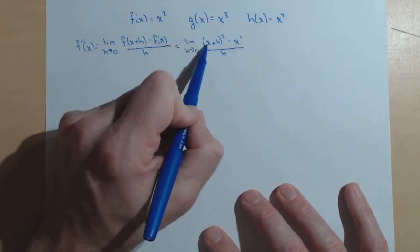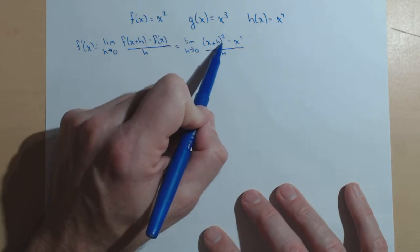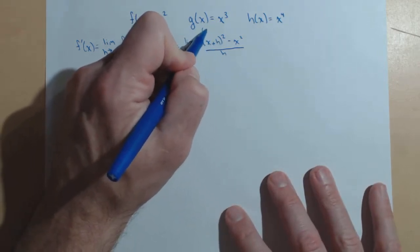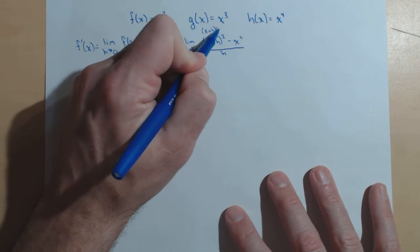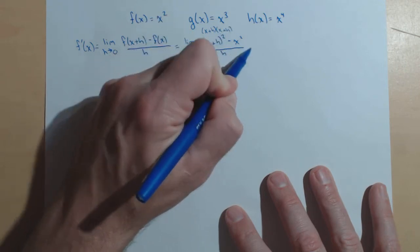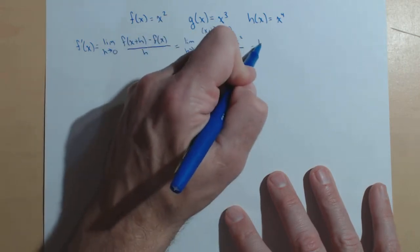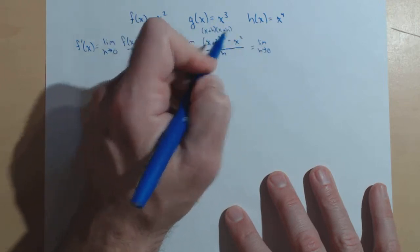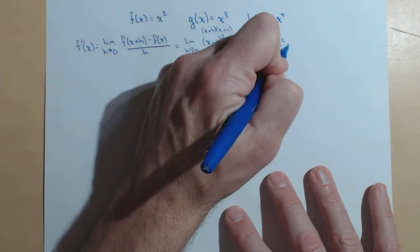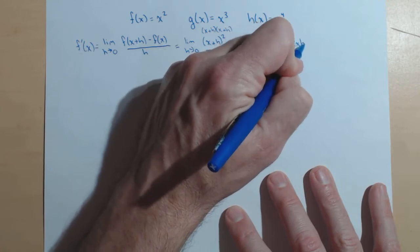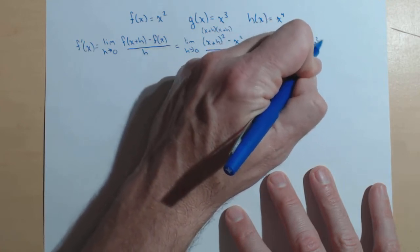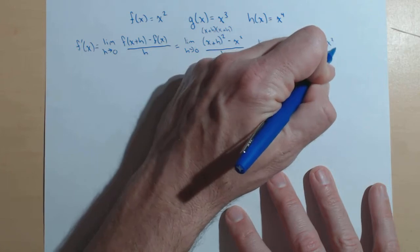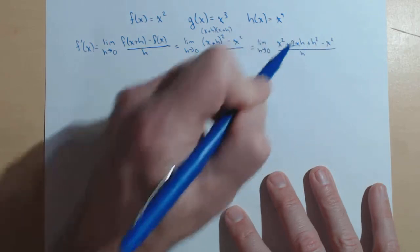Now, a common mistake here is to say that this is x squared plus h squared. This needs to be foiled out. This is x plus h times x plus h. So, I'm not going to foil that out in this particular video, but multiplying that out, you would get x squared plus 2xh plus h squared minus x squared, all over h.